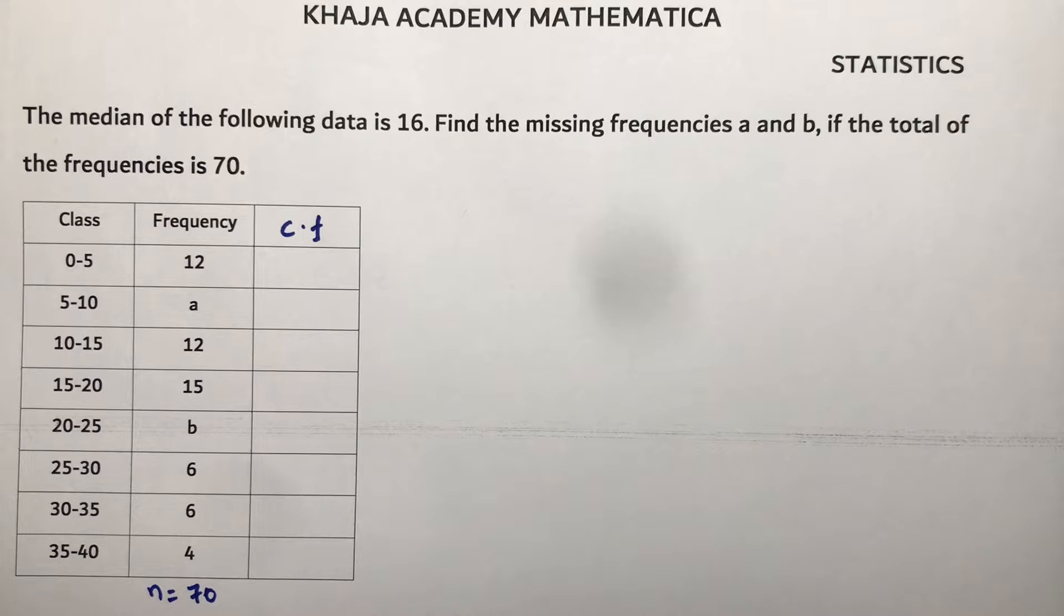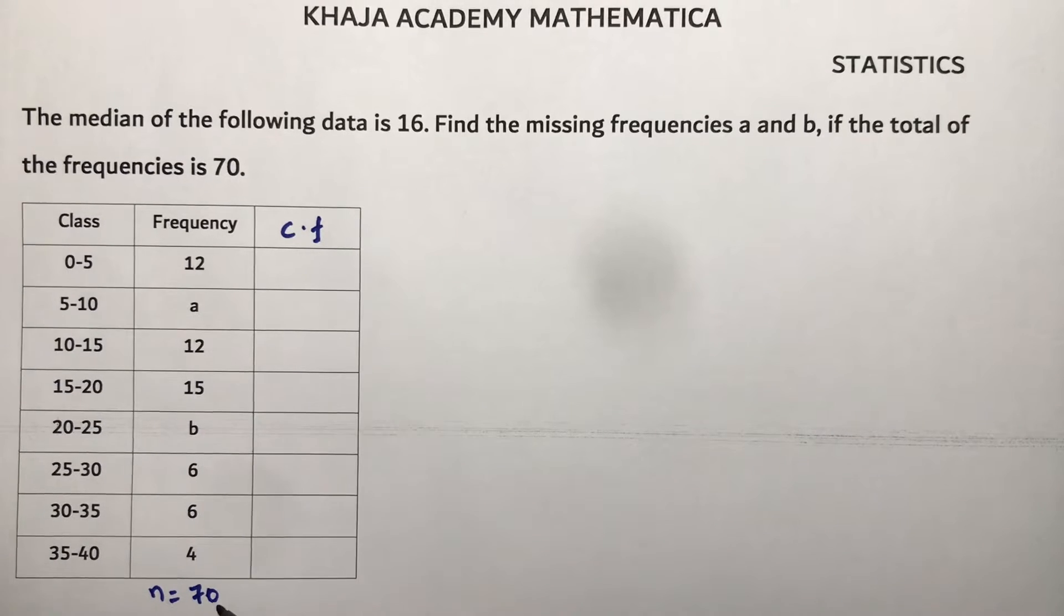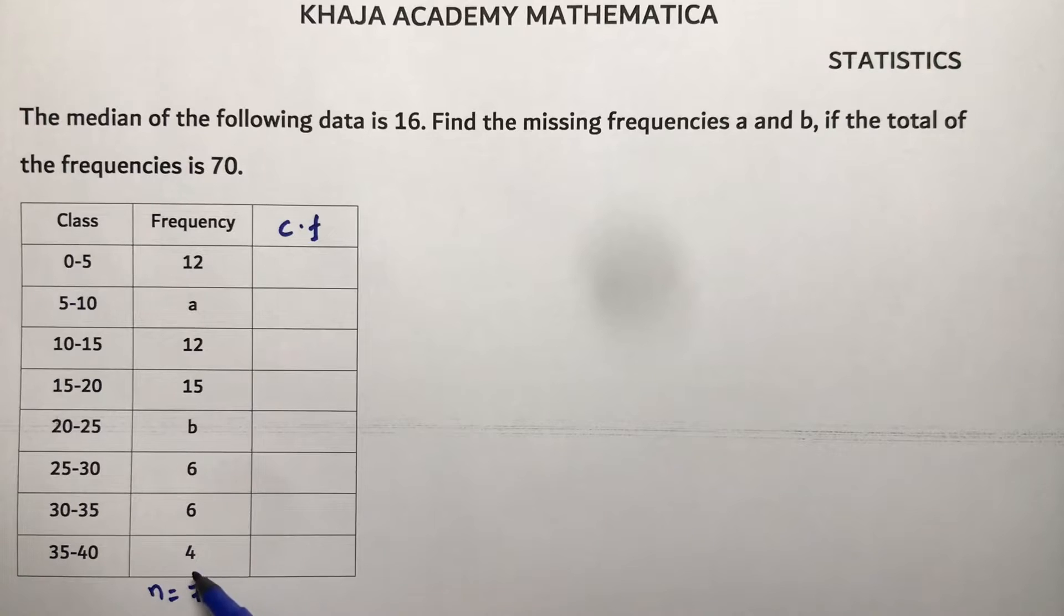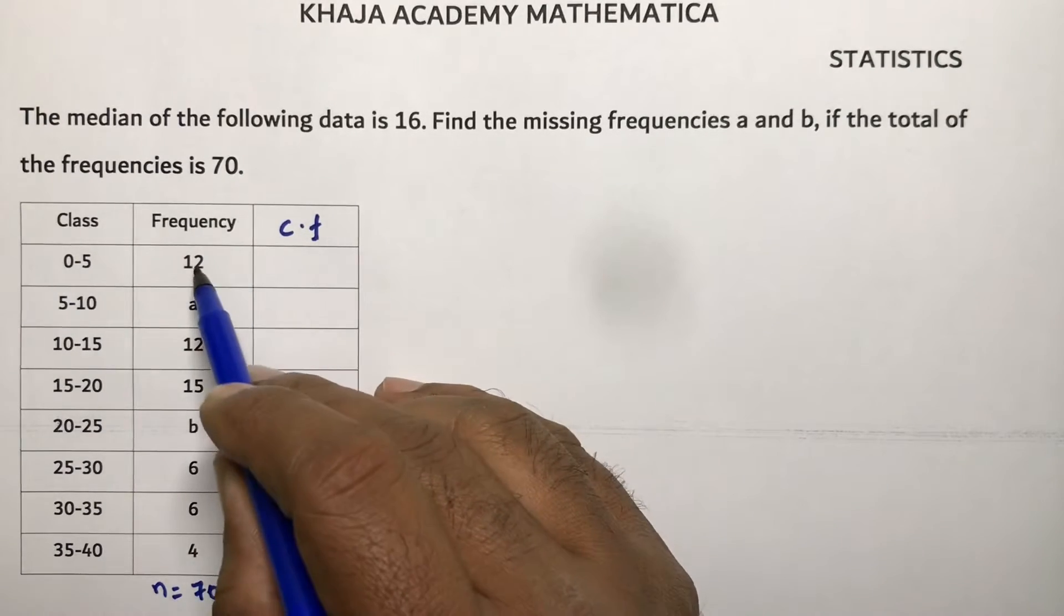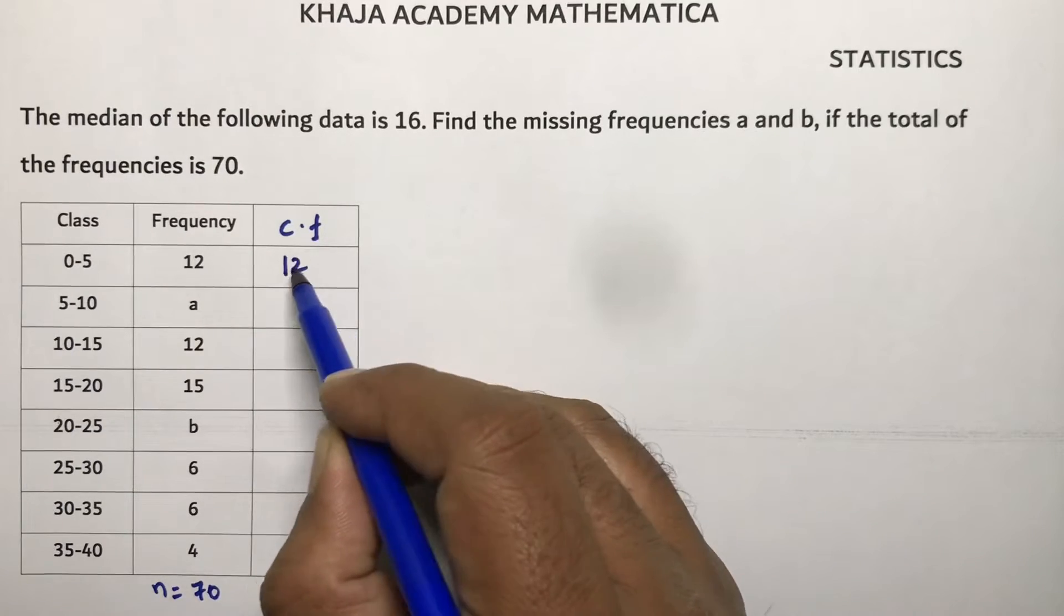The median of the following data is 16. Find the missing frequencies a and b. The total frequency is given as 70. So first we need to find cumulative frequency. We need to write 12, 12 plus a plus 12 that will become 24 plus a.